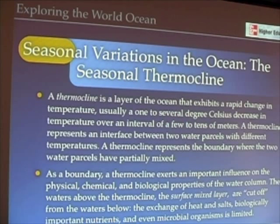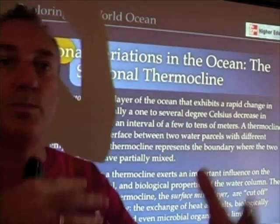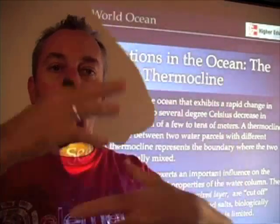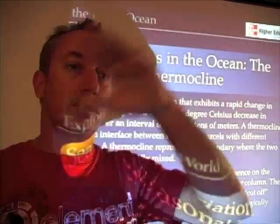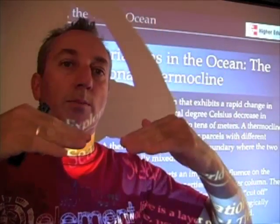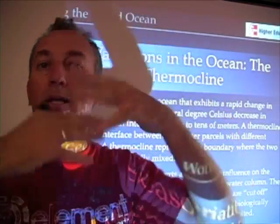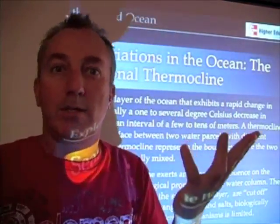In the upper ocean, that layer above the thermocline is called the surface mixed layer. It's called the surface mixed layer because it takes on its own independent properties. That surface mixed layer tends to be mixed up because of winds blowing, and it tends to have very similar properties from the surface down to the thermocline — it's called mixed because it's mixed up.